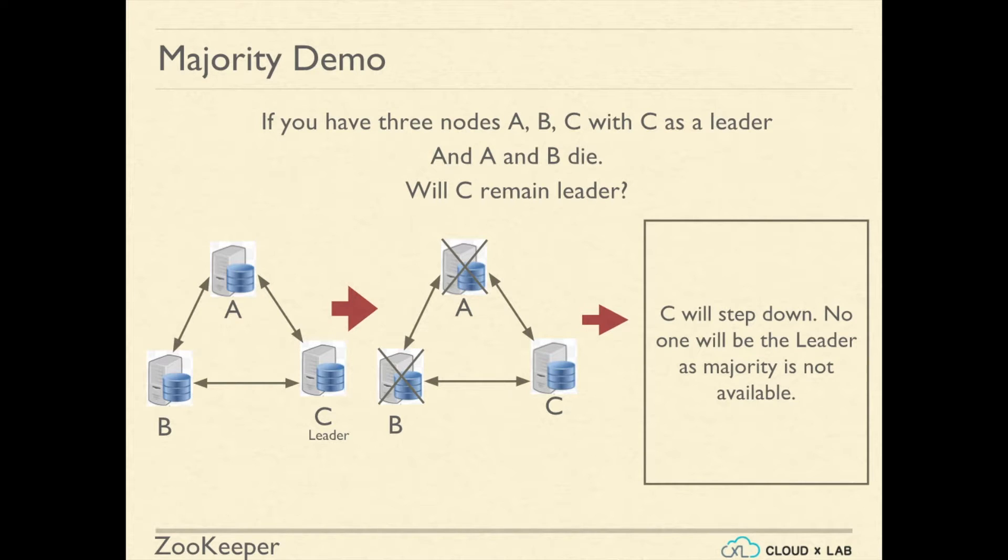C will step down. No one will be the leader because majority is not available—only one out of three is available.